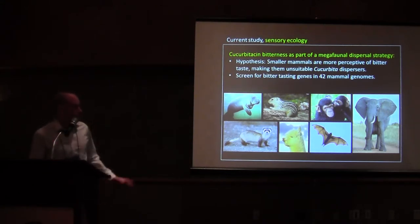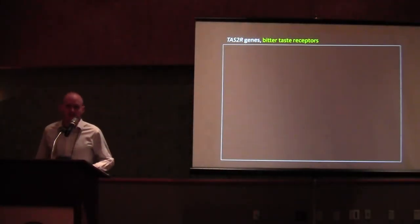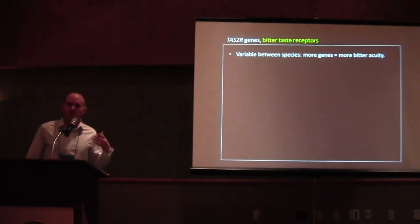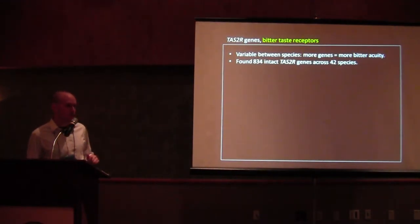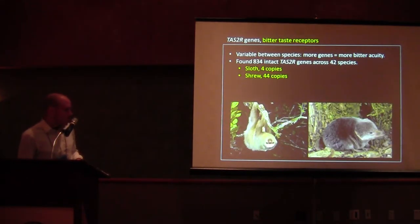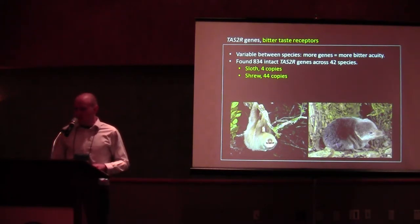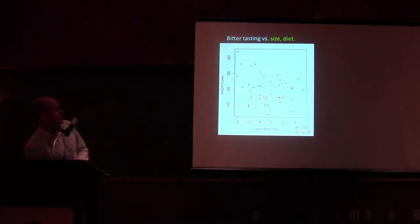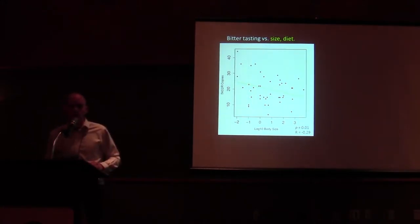To test this, we took 42 published mammal genomes, basically all the placental mammal genomes of decent quality, and we screened them for bitter tasting genes in order to sort of reconstruct sensory ecology across all the mammals we could. These were across a range of ecological types and forms. What we're screening for are these TAS2R genes, we'll call them tasters. They're a family of bitter taste receptors, and they have variable copy numbers between different species with more copies indicating a greater breadth of bitter taste perception. Humans have 25, and if you have any particular aversion to black coffee, for example, you have a TAS2R gene to thank for that. We found 834 intact TAS2R genes across these 42 species. They range from four copies in a two-toed sloth to 44 copies in a common shrew. So, again, revisiting the hypothesis that body size affects in some way the ability to taste bitter compounds. We can plot the bitter tasting acuity on the y-axis along with body size on the x, and we do find a quite significant negative correlation between body size and bitter tasting acuity.